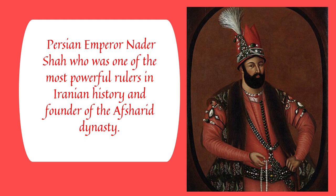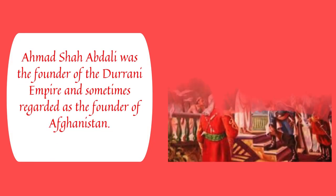In 1739, Nader Shah of the Turkic Afsharid dynasty looted the treasury of India, killing more than 100,000 people in Delhi. He took with him women and craftsmen. When Kapoor Singh heard of this, he promised he would protect the women of Muslims and Hindus, so the Sikhs attacked the rear of the caravans, freeing the women and craftsmen and recovering part of the treasure.